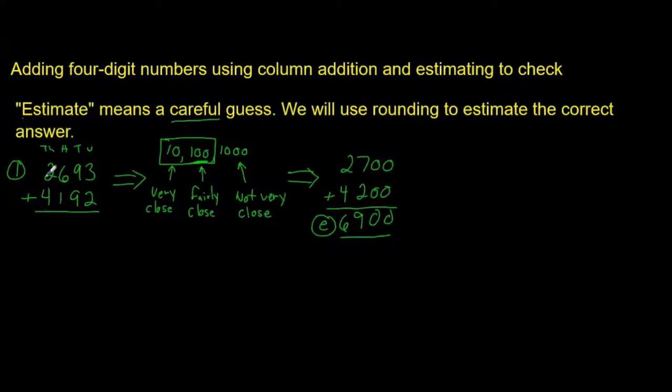So, our answer when we work out here should be close to 6,900. And because we rounded up, this 2,693 became 2,700, and 4,192 became 4,200, because we rounded up, then our answer here should be smaller than 6,900. So, let's see if we're right.